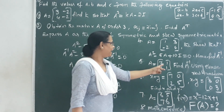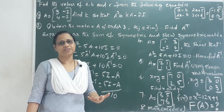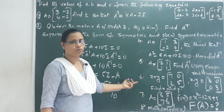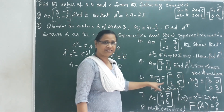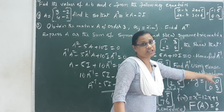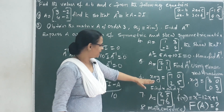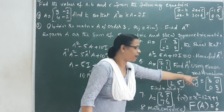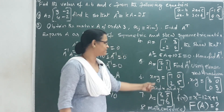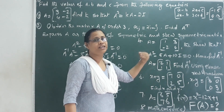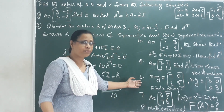Next question: A equals [2, 1; 1, 1]. Find A inverse using elementary row transformation. Also, given matrix equations X plus Y equals [7, 0; 2, 5] and X minus Y equals [3, 0; 0, 3], find X and Y. By adding the two equations, 2X equals the sum of the two matrices. Then substitute back to find Y.